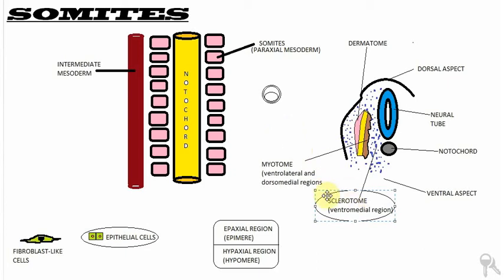It is going to form the vertebrae and the ribs. Some other cells present in the dorsal-lateral regions, the ventral-lateral regions, as well as some of the dorsal-medial regions will form the myotome. The myotome is going to form the muscles of the body wall as well as some of the muscles of the limbs. The regions which are left behind are known as the dermotomes. The dermotomes and myotomes are usually considered together as the dermomyotome. This explains why muscles and different regions of the body are innervated by nerves coming from a wholly different region.